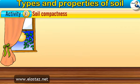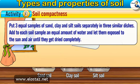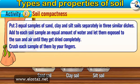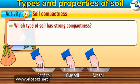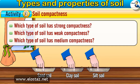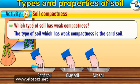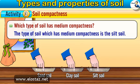Activity 3: Soil compactness. To know the degree of compactness of each type of soil, put three equal samples of sand, clay, and silt soils separately in three similar dishes. Add an equal amount of water to each sample and leave them exposed to the sun and air until completely dried. Crush each sample with your fingers. The type of soil with strong compactness is clay soil. The type with weak compactness is sand soil. The type with medium compactness is silt soil.